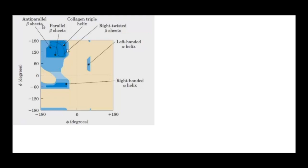As you can see in the plot, there are three color regions. The dark blue color is the region where bond angles are most easily allowed — the most feasible region — which includes beta sheets (anti-parallel and parallel) and the collagen helix. The intermediate blue region has bond angles that are less favorable compared to the dark region. The lightest blue region is where it is very difficult to have that bond angle — it is the least favorable condition, but the angles are still technically allowed.